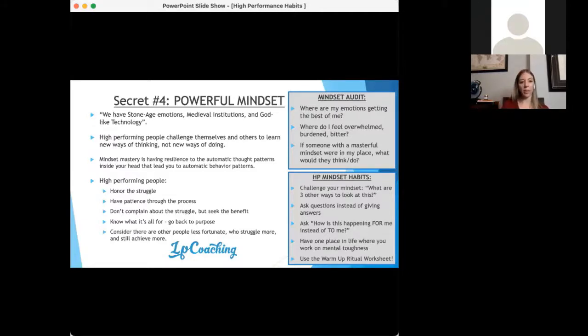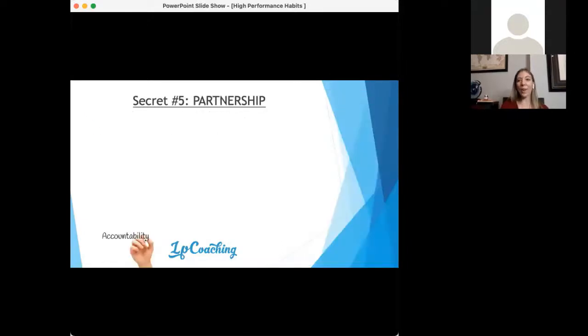I love the question: how is this happening for me instead of to me? This is a great question. How is this happening for me? Also have one place in your life where you work on mental toughness. The last thing I popped in here is use the warmup ritual worksheet. This is my worksheet on three steps to go from resistance to action. I will send that out in my email.